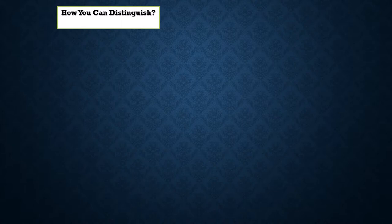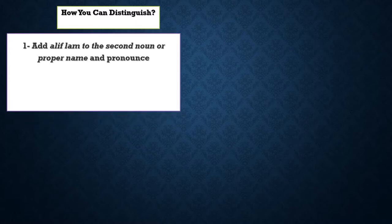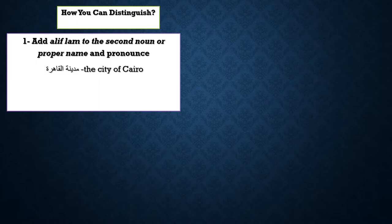I will introduce all of them to you, then you decide which one you want to use — whichever feels more comfortable and easier for you. You don't have to follow all five rules, just pick one and stick with it. The first rule: you add alif-lam to the second noun or proper name and pronounce it. For example, you don't say 'madina al-qahira' — you say 'madinatu al-qahira.' If you pronounce a ta sound, then it's ta marbuta.